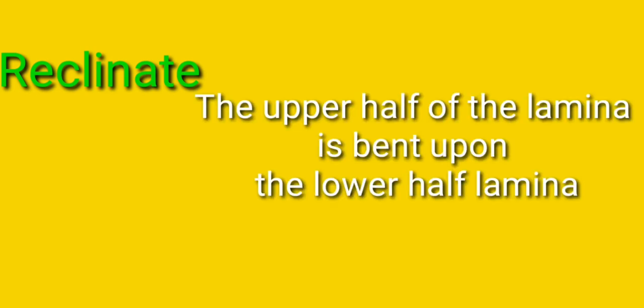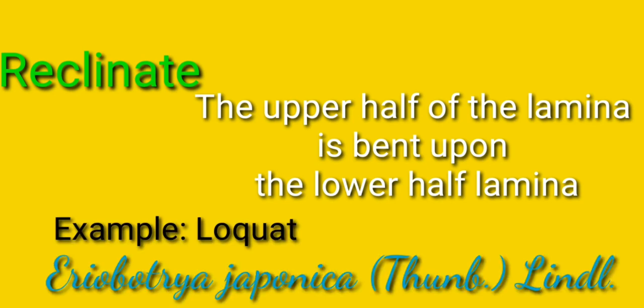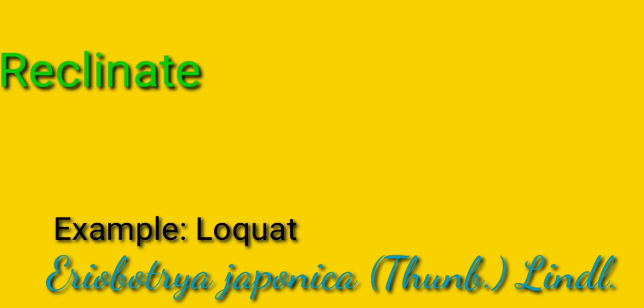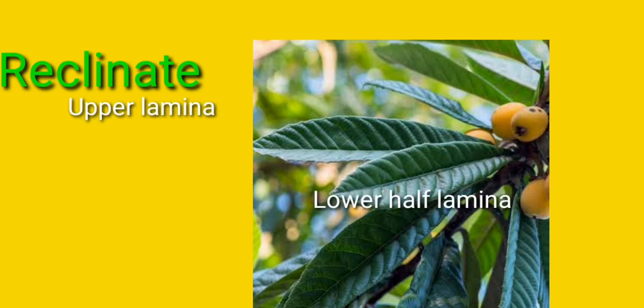First we are going to see about the reclinate. Here the upper half of the lamina or leaf blade is bent on the lower half of the lamina or leaf blade. The example for the reclinate type of Ptyxis is the loquat plant. Its binomial name is Eriobotrya japonica. This is the mature leaf of loquat, showing the upper lamina and lower half of the lamina.